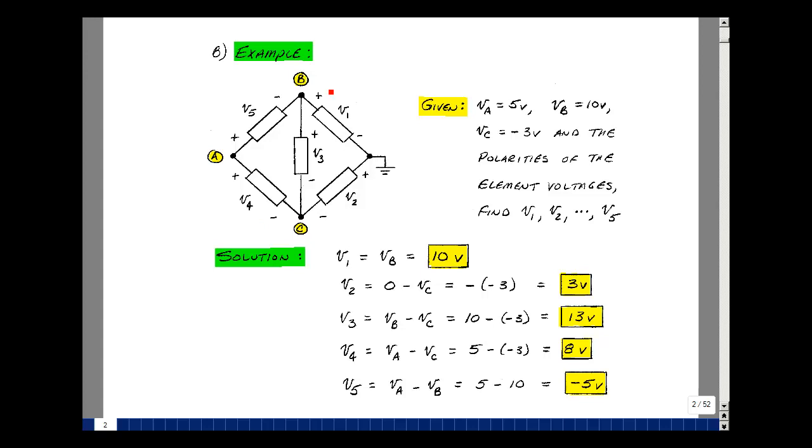Let's first solve for the voltage V1. V1 actually is the node voltage V sub B, and that was equal to 10 volts. V2 has the plus sign and ground and the minus sign here. So what this really means is that V2 is this node voltage, which is zero, minus V sub C. But V sub C was minus three volts, and that would give me a plus three volts.